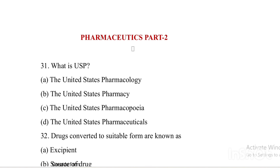What is USP? Option A: United States Pharmacology. Option B: United States Pharmacy. Option C: United States Pharmacopeia. Option D: United States Pharmaceutical. Answer is Option C, United States Pharmacopeia.